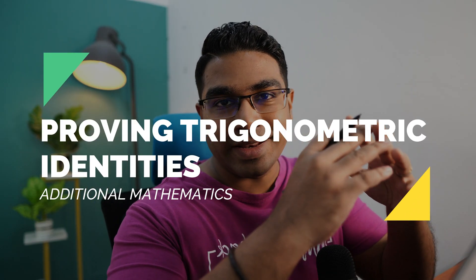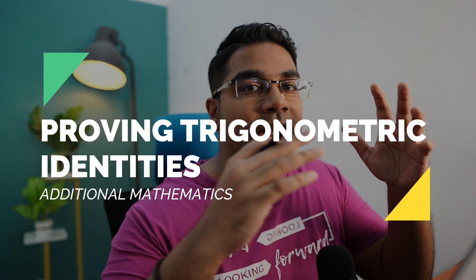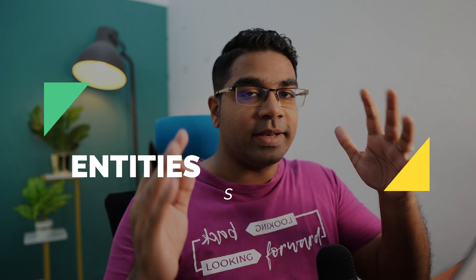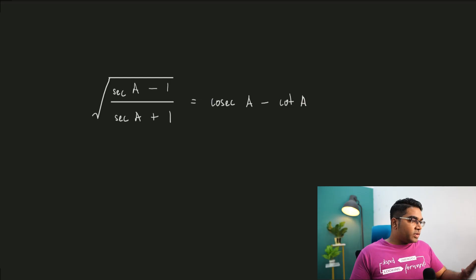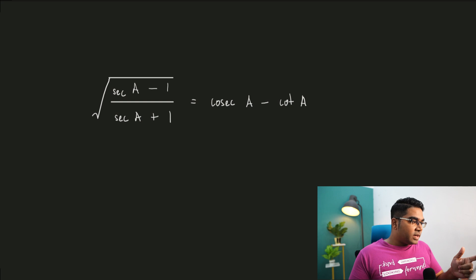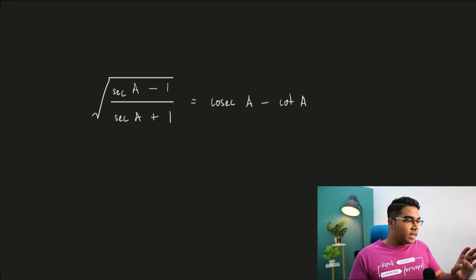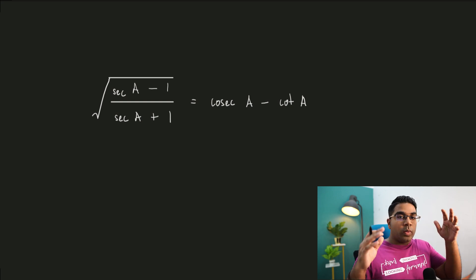Hey guys, in this video we'll be discussing how to prove trigonometric identities using basic identities. Let's look at the question. Here we have square root of secant a minus 1 over secant a plus 1, equals to cosecant a minus cotangent a.